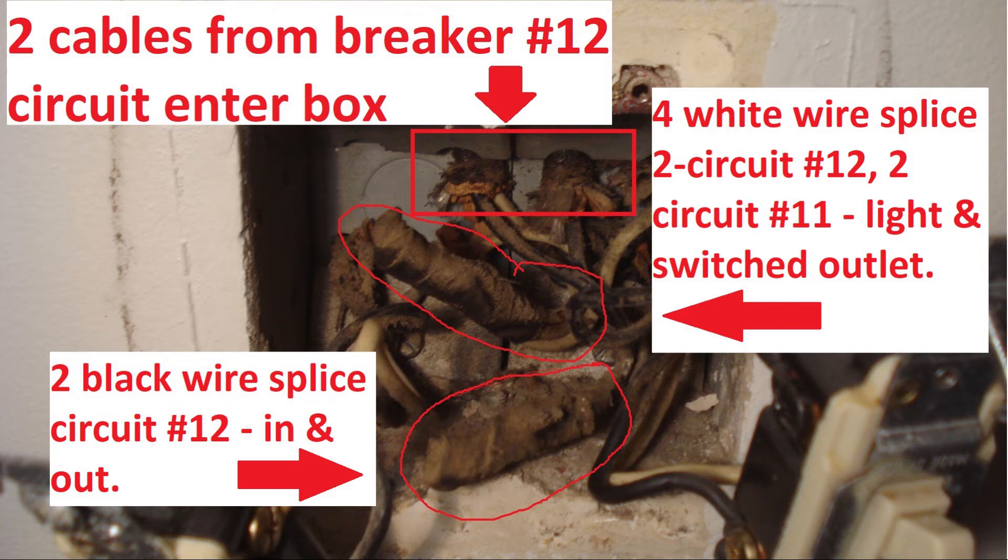One goes to the hallway light and the other goes to a switch outlet controlled by the other pair of three-way switches. Bottom center is two black wires spliced together. That's just the in and out for the circuit connected to breaker number 12.